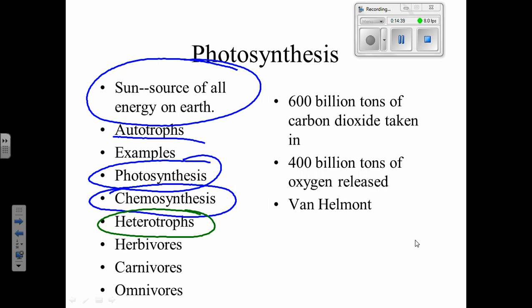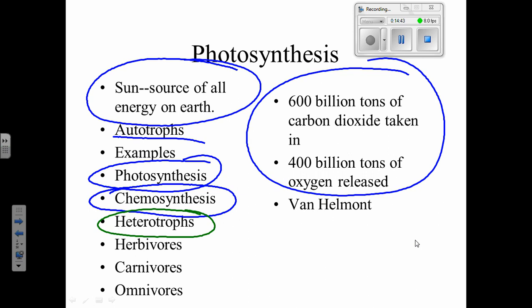Here are some big numbers. Scientists have estimated that every year plants, bacteria, and algae take 600 billion tons of carbon dioxide out of the air. That's a lot of gas — 600 billion tons. And they release on average about 400 billion tons of oxygen.